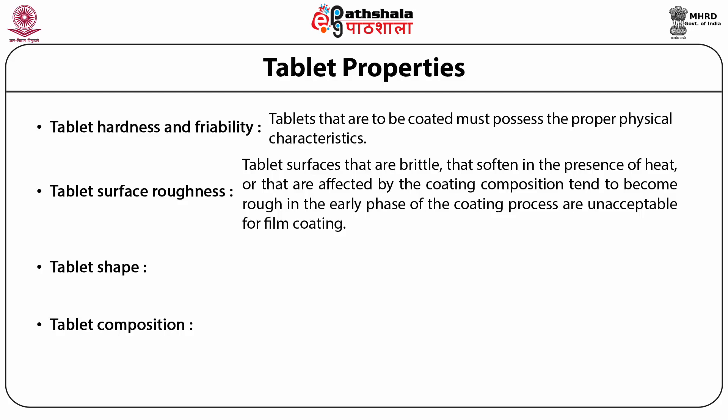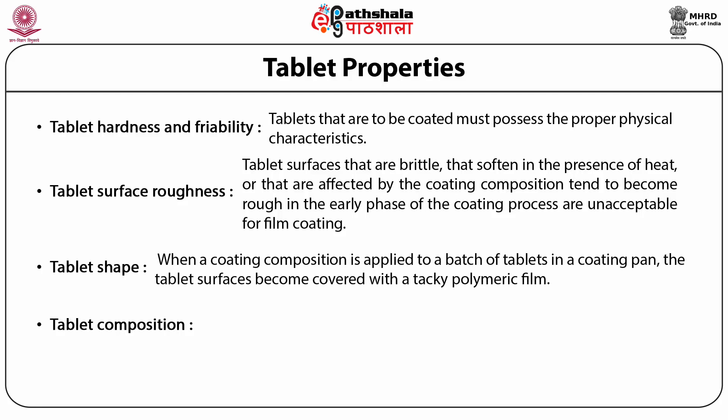The third important parameter is tablet shape. When a coating composition is applied to a batch of tablets in a coating pan, the tablet surface becomes covered with a tacky polymeric film. Before the tablet surface dries, the applied coating changes from a sticky liquid to a tacky semi-solid and eventually to a non-tacky dry surface. The tablets must be in constant motion during the early drying phase; otherwise, tablet agglomeration can occur.